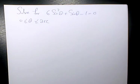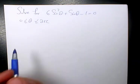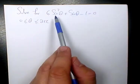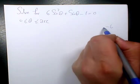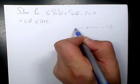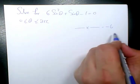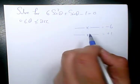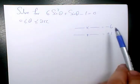We need to solve it by factoring or any other method that's convenient. I'm going to use the AC method. 6 times negative 1 is going to be negative 6, and the coefficient here is positive 1.